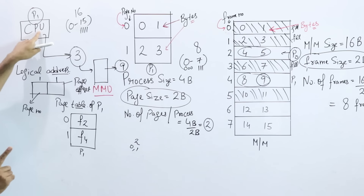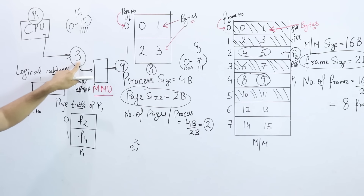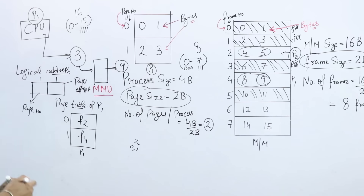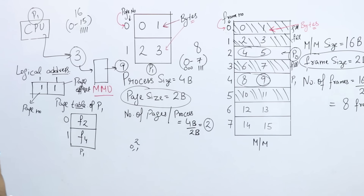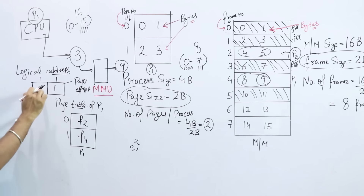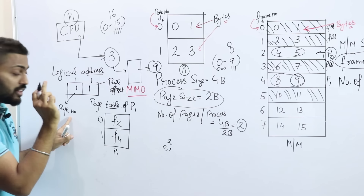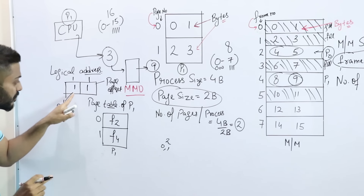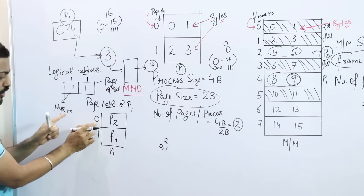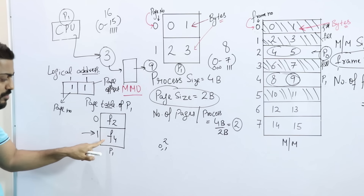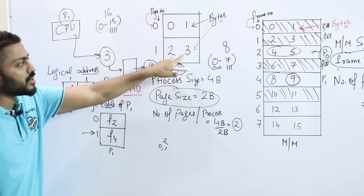Now the CPU had generated address 3. How do we represent 3 in binary? 3 is represented as 1, 1 — i.e., two 1s. So we write 1, 1. This means page number is 1 and the offset is 1. So we need to go to page number 1 in the page table. Page number 1 has 2 bytes, and we need the 0th or 1st byte within it.